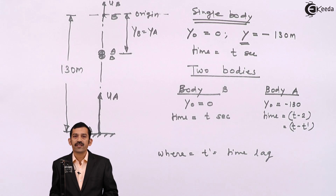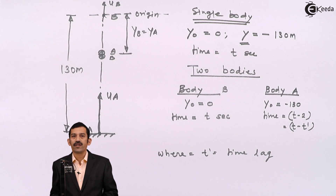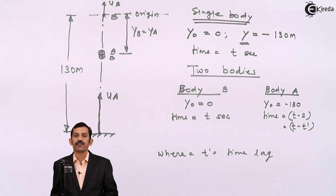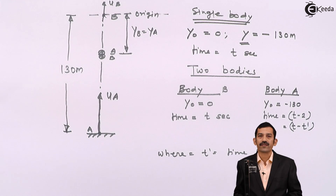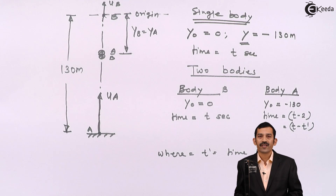When two bodies strike each other, or one car overtakes another, or one train meets another, their final positions are the same. Along the X-axis: X_A = X_B; along the Y-axis: Y_A = Y_B. Equating these final positions gives the solution to the problem. Thank you.